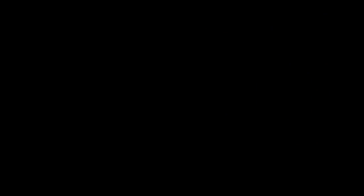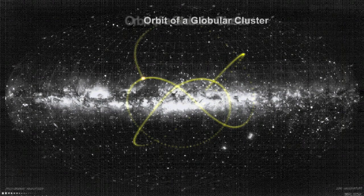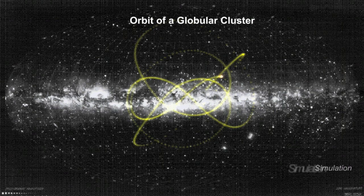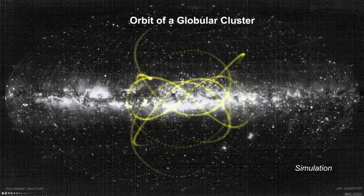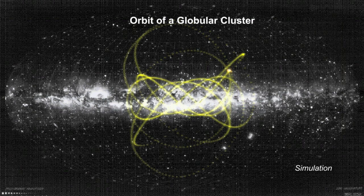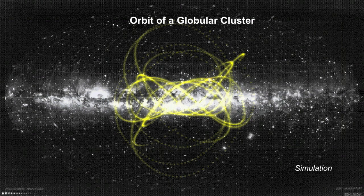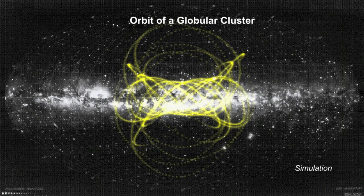Globular clusters, which are among the oldest objects in the Milky Way and found typically in the halo of our galaxy, will be extensively observed by Gaia. Measurements of their distance will enable astronomers to precisely determine their age and hence refine the lower age limit of the Universe.